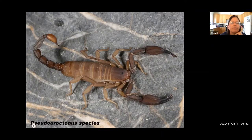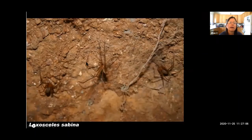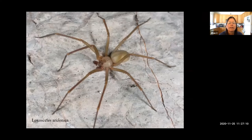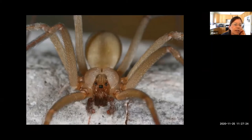One other spider found in that cave is Loxosceles sabina — the only known population in the entire world, found in this small cave, where it has captured a Pseudouroctinus scorpion. Related to the brown recluse and our local Loxosceles arizonica, these spiders also live on the surface, in garages, and in houses. They possess the unusual venom component sphingomyelinase D, which can cause tissue damage and necrosis — always wear gloves when cleaning your garage.